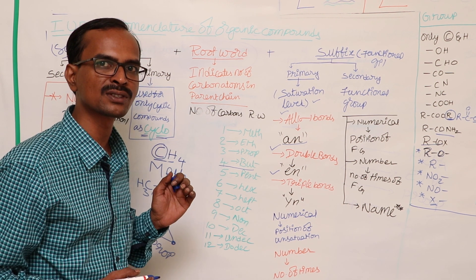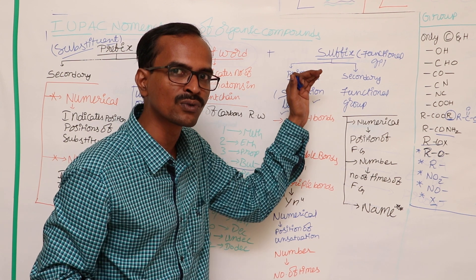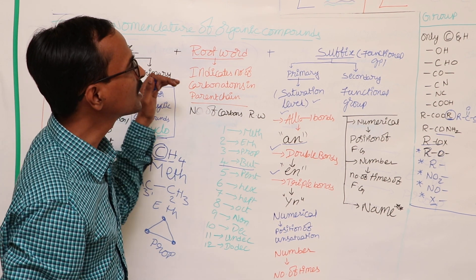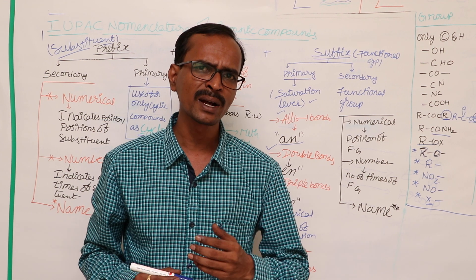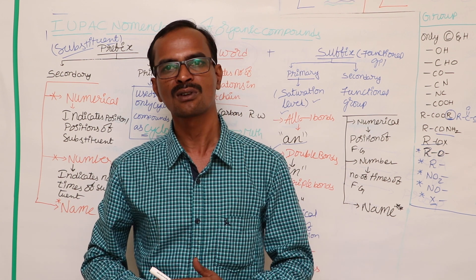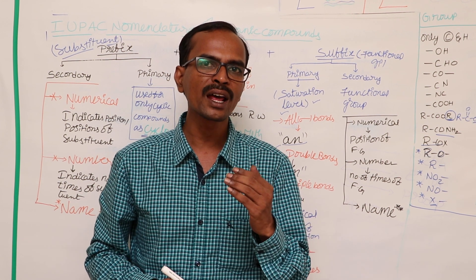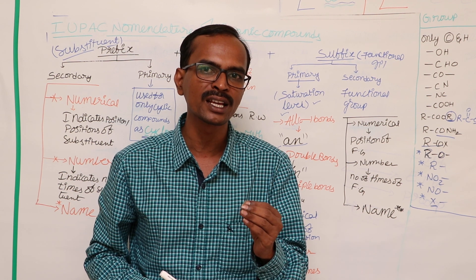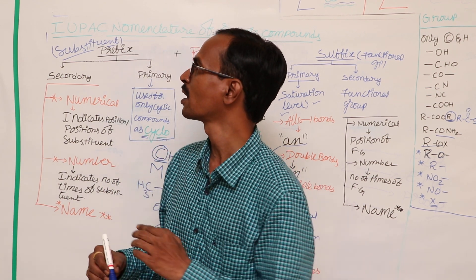In the skeletal structure of the IUPAC name, there are two more words: suffix and prefix. The word we write after the root word is called the suffix, and the word we write before the root word is called the prefix. The suffix gives information about the functional group — that is, an atom or group of atoms responsible for the chemical properties of an organic compound. Apart from functional groups, there are other atoms, other than carbon and hydrogen, responsible only for physical properties and not chemical properties. Such atoms or groups are called prefixes.